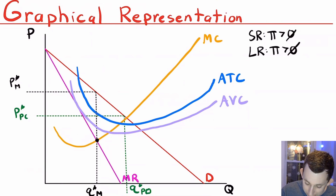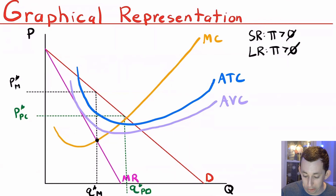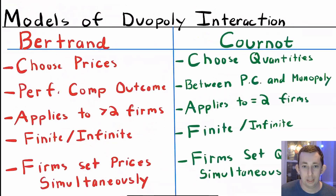Both the average total cost in blue and the average variable cost in light purple are below the demand curve, which means that in both the short-run and the long-run, firms in an oligopoly or duopoly market are going to be making positive economic profit. When we talk about an oligopoly or specifically a duopoly, there's going to be interaction between those two or a few firms.